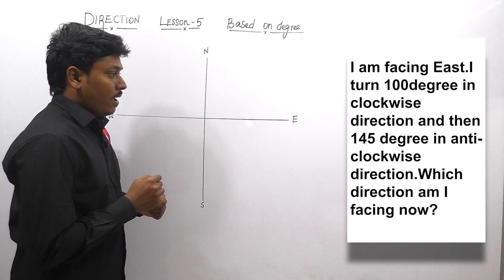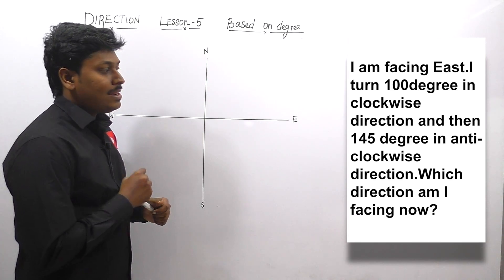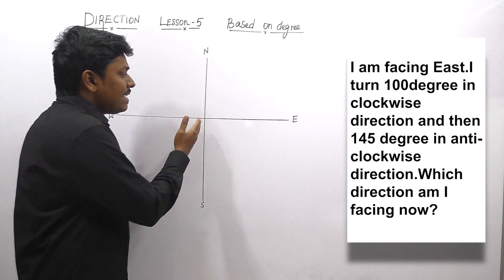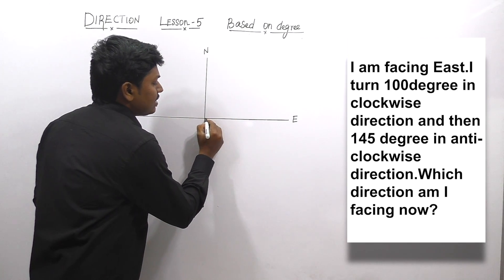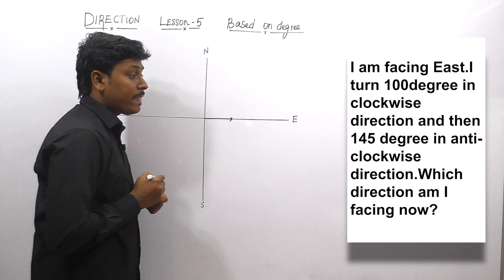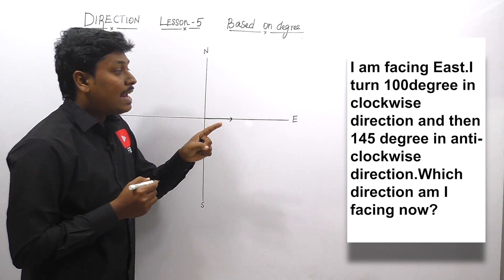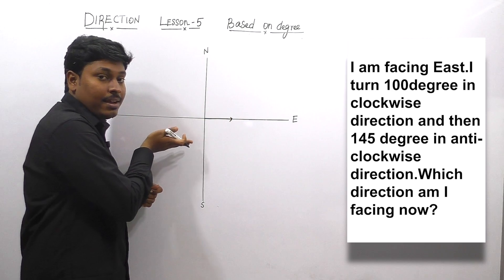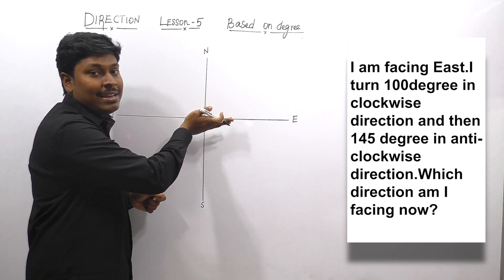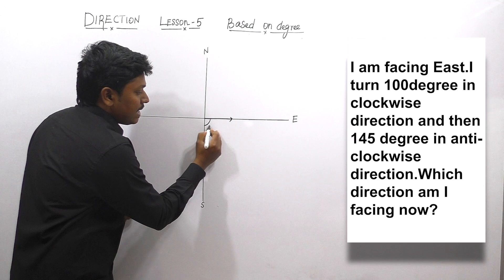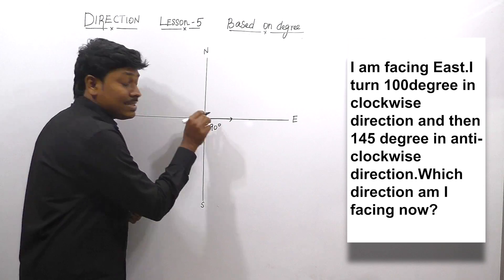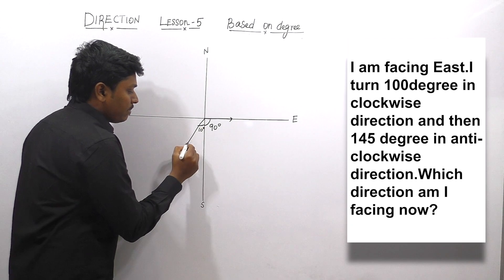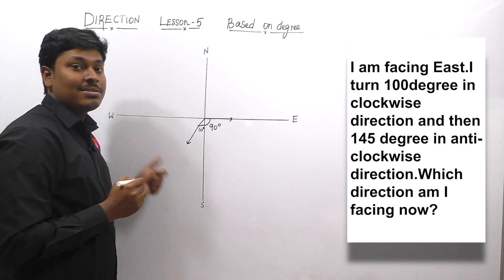Question number two: I am facing east. I turn 100° in clockwise direction. First of all, I am facing the eastern side. From the starting point, a person is facing towards east. After that, I turn 100° in clockwise direction. We know that clockwise direction will be this side, and the person is turning 100° clockwise. This will be 90° right, and he is turning 100°, so there is a small additional 10°. Now the person is facing towards the southwest direction.